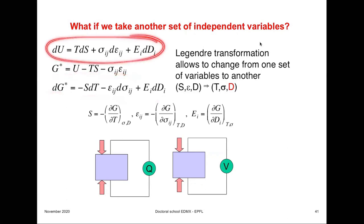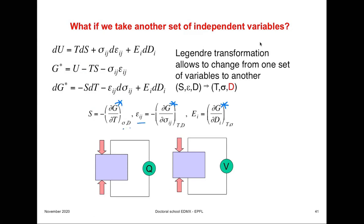We find the differential of G* and get that entropy is the first derivative — this should be G* — and I think there are some errors in these slides from copy-paste. With stress and D constant, strain equals the first derivative with respect to stress at constant temperature and D. The electric field equals the derivative of G* with respect to D at constant temperature and sigma.